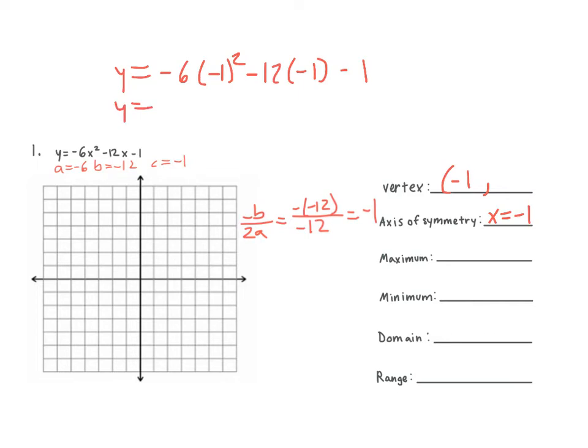What is negative 1 squared? Positive 1. So positive 1 times negative 6 is negative 6. Negative 12 times negative 1 is positive 12, minus 1. So we have negative 6 plus 12 minus 1.